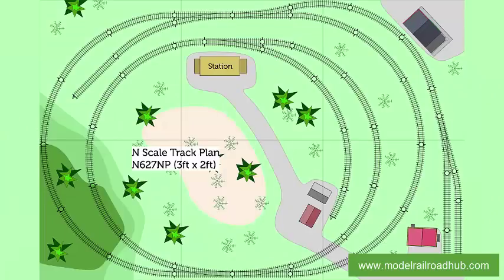Scenery, buildings, bridges, tunnels, sidings, gradients, and curves can all add interest and disguise the appearance of a boring oval-shaped racing track.